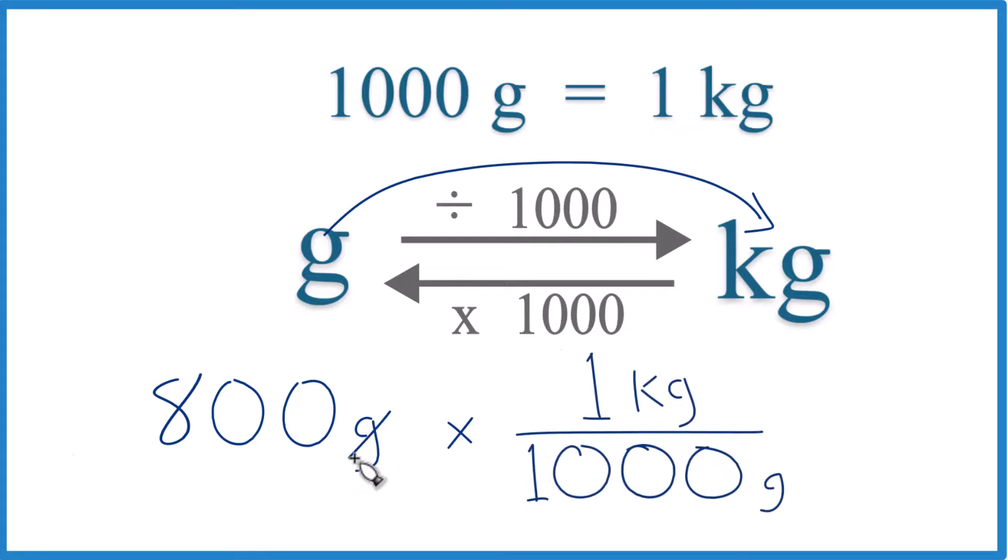We have grams on the top and the bottom, so we're going to be left with kilograms. 800 times one kilogram, that's 800 kilograms, divided by 1,000. That gives us that 0.8 kilogram number that we got before.